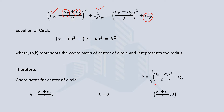Since there is no standalone tau_xy term in the k position, k equals zero, meaning the center of the circle lies on the normal stress axis. The radius is then given by the remaining expression. So ultimately we have obtained both the coordinates of the center of the circle and the radius of the circle.